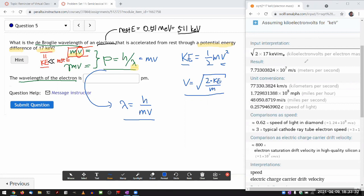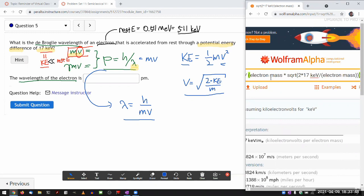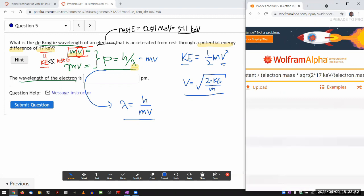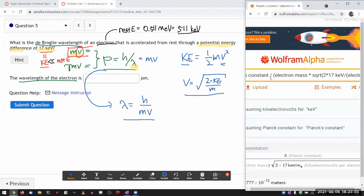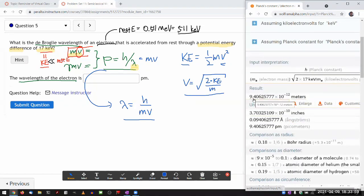So I have velocity in the expression that I wrote down there already, so I'm going to just add on, so Planck's constant divided by electron mass times, and this square root thing was the expression for velocity. So put that in, and what the answer says now is 9.4 times 10 to minus 12 meters, and 10 to minus 12 is picometers.